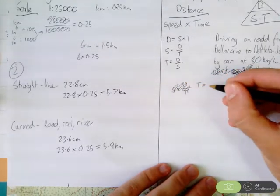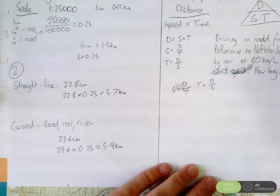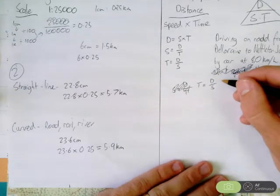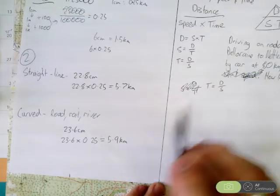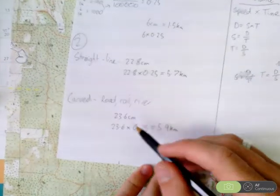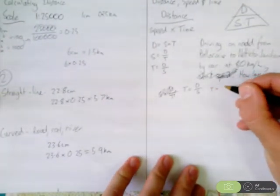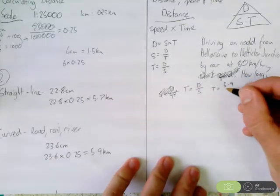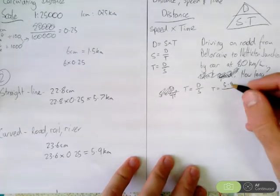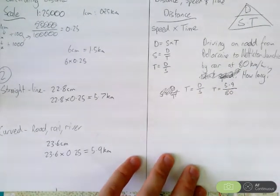So, time equals distance over speed. So, we know that the distance, by road, because we're travelling by car, so the curved distance would be 5.9 km. And we've got that in km per hour. 5.9 over 80.